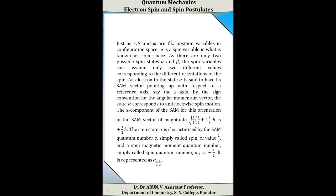Since there are only two possible spin states alpha and beta, the spin variable can assume only two values corresponding to different orientations of the spin. An electron in state alpha has its spin angular momentum vector pointing up with respect to the reference z-axis — corresponding to anti-clockwise spin motion. The z-component of spin angular momentum for this anti-clockwise orientation has magnitude equal to +1/2 × h-cross. This spin state alpha is characterized by s = 1/2 and m_s = +1/2, represented as alpha(1/2, 1/2).